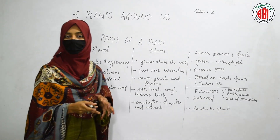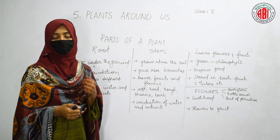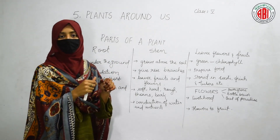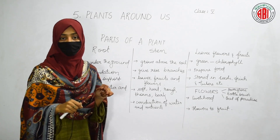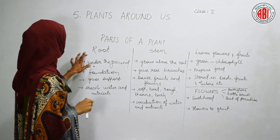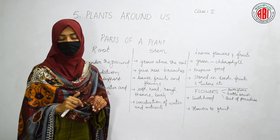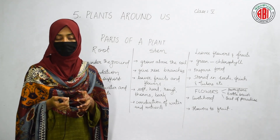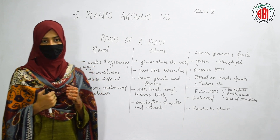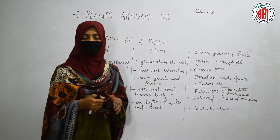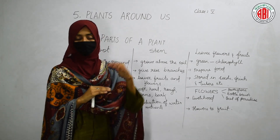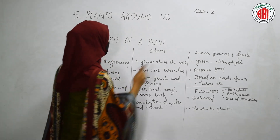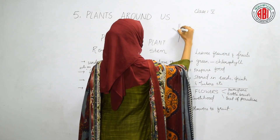Roots absorb the water and nutrients present in the soil and supply them to the other parts of the plant. The next part is the stem. The stem grows above the soil and gives rise to branches. Those branches bear leaves, fruits, and flowers. Some stems are soft, some are hard, some are rough, and some bear thorns — for example, the rose plant has thorns on its stem.